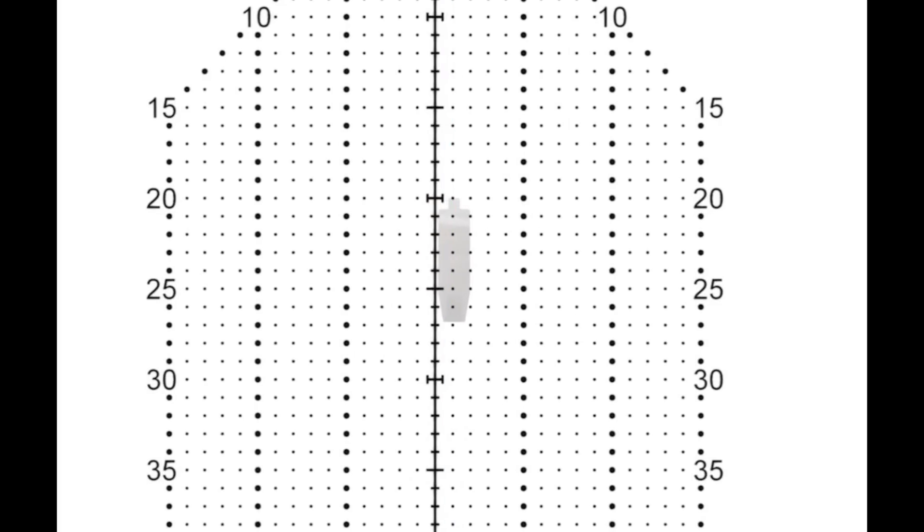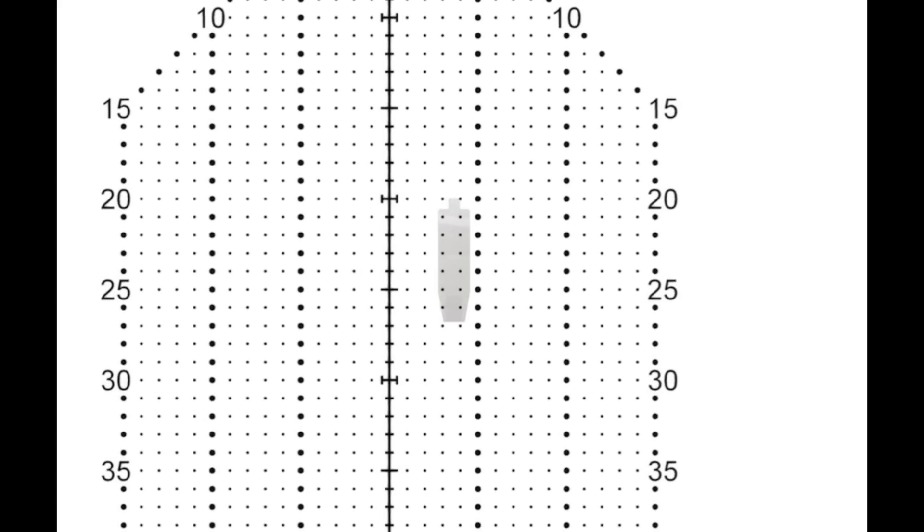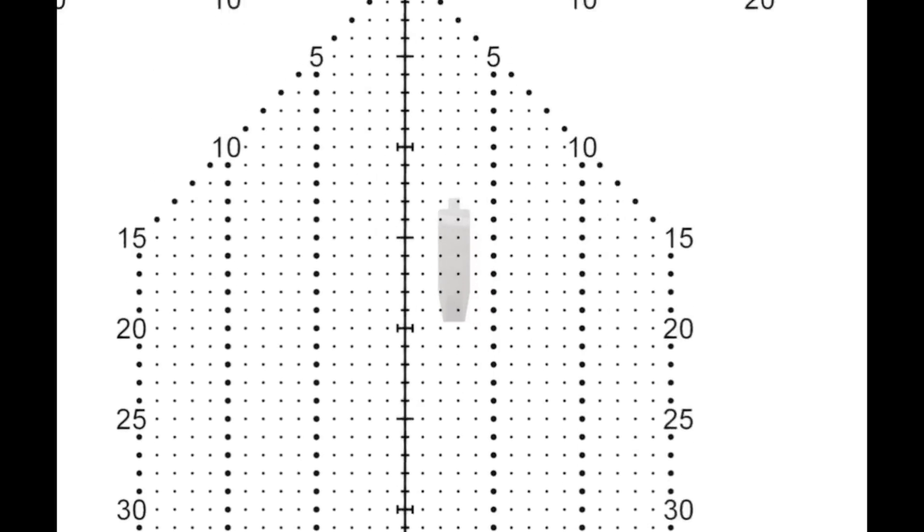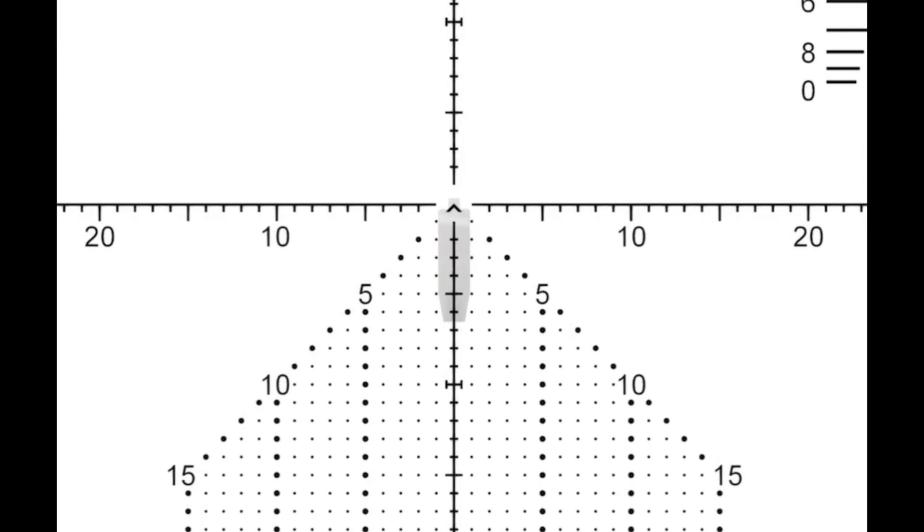So let's say we said 20 minutes and then 4 for wind. You just simply hold 4 dots over, and there you are. You don't have to touch the turrets or have any moving parts. That allows you to be very, very precise.